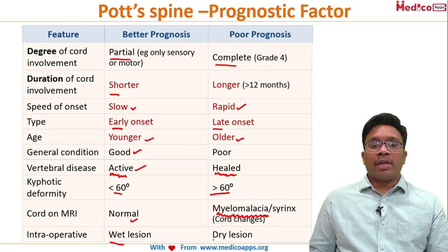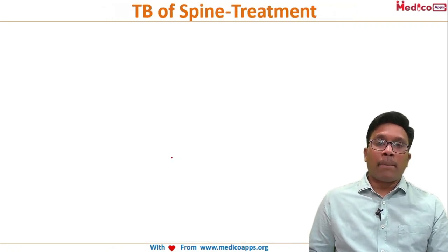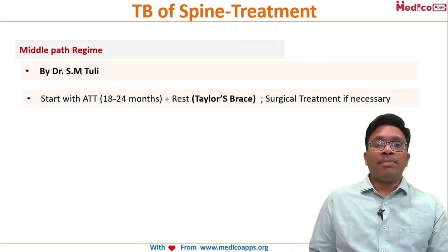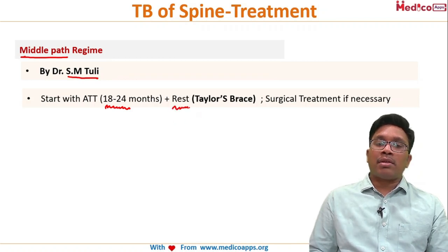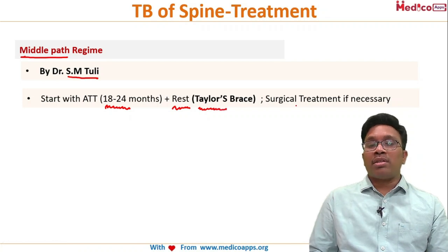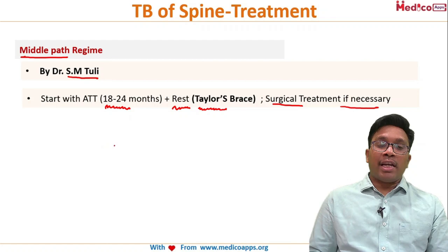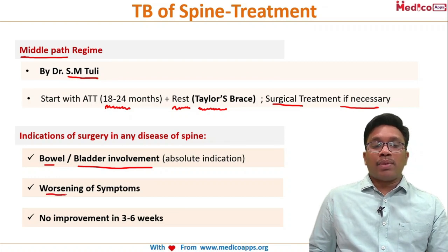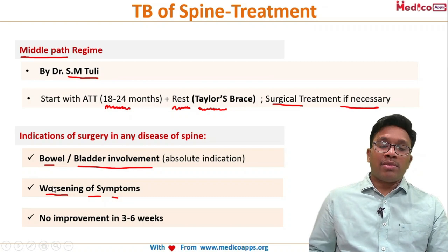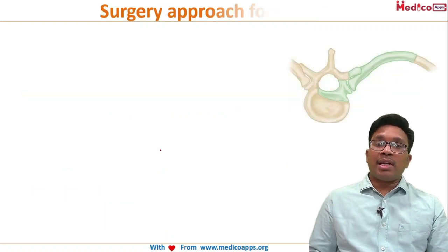Treatment of tuberculosis of the spine uses Dr. S.M. Tuli's middle path regime: start anti-tuberculous drugs for 18 to 24 months, give rest, apply a Taylor's brace, and perform surgery only if necessary. Indications for surgery include bowel or bladder involvement, worsening of symptoms, or no improvement in three to six weeks.